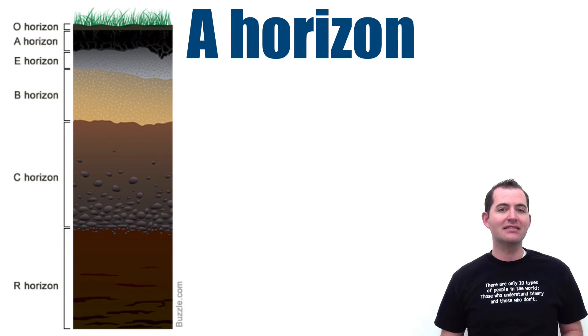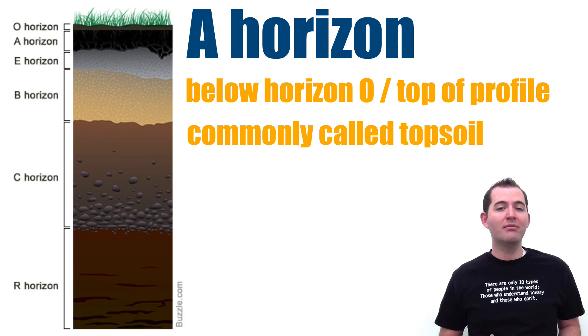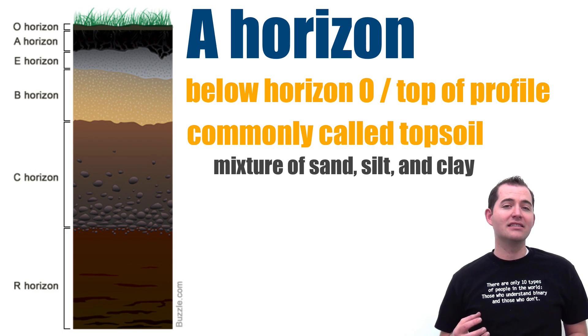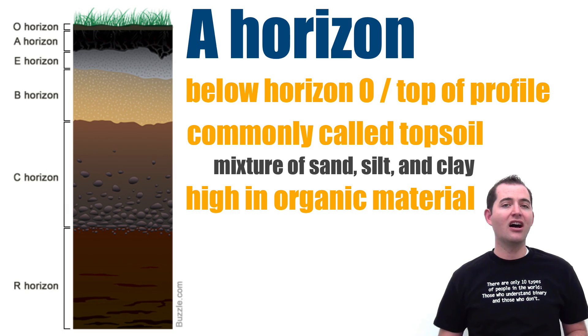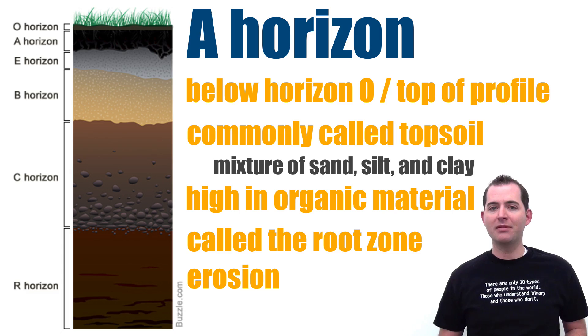Horizon A is the layer found below horizon O, or if a particular soil does not have a horizon O, it exists at the top of the surface. This horizon is commonly referred to as topsoil and is made of a mixture of sand, silt, and clay. This horizon is usually high in organic material and is often called the root zone. Horizon A is also susceptible to wind and water erosion.